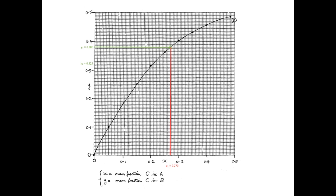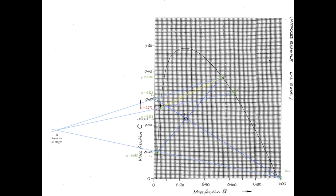So y₂ equals 0.325. We draw our line across to the curve and drop it down to the x-axis to obtain x₂ equals 0.210. Plotting that value of x₂ on our diagram, we can identify point L₂, and V₂ and L₂ are joined by a tie line.